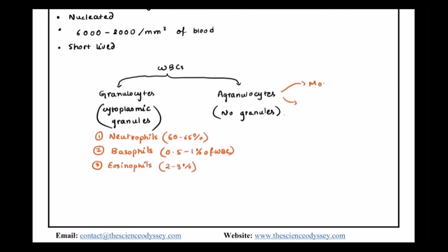One is the monocyte, which is about 6 to 8%.